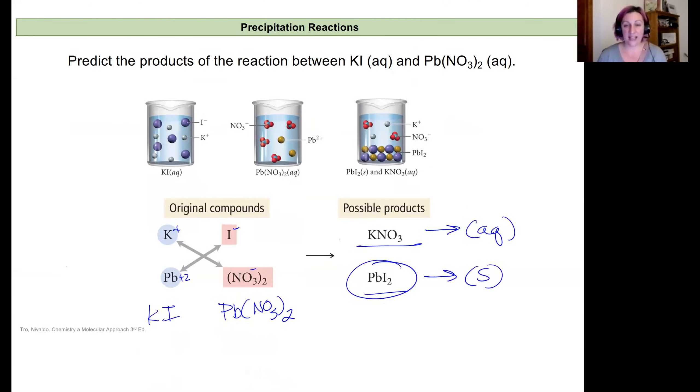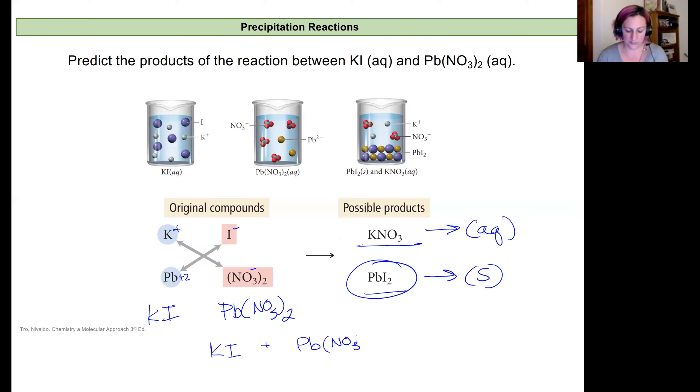We can write that chemical equation completely as potassium iodide plus our lead nitrate. And we know that both of our reactants were aqueous. And we learned from our solubility chart that our potassium nitrate will be aqueous and our lead iodide will be solid. Now I'm going to balance this. I can see already that I need two iodides to pair with my lead. So I'll need two potassium iodides. And I have two nitrates in my lead reactant with my lead nitrate reactant. So I'll have two nitrates to work with. So I need a two here in front of my potassium nitrate. And then I have a balanced precipitation reaction where I predicted the products.